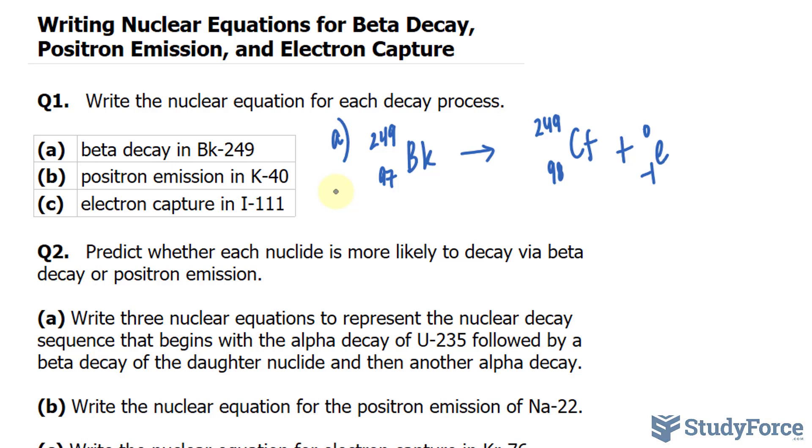Let's write down K-40. It has 19 protons, and as mentioned, this will decrease by 1. And make sure that when you're doing this, you switch K with argon,